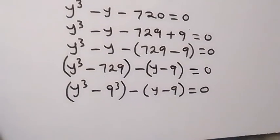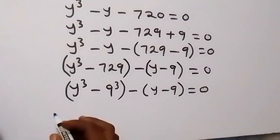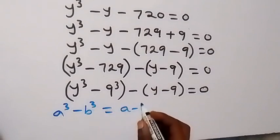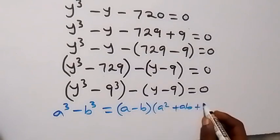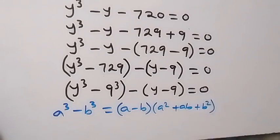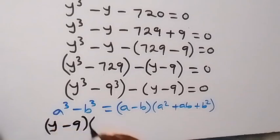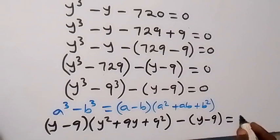Applying the difference of two cubes formula, a³ - b³ = (a-b)(a²+ab+b²), we get (y-9)(y²+9y+81) minus (y-9) equals 0. Since (y-9) is common, factoring it out gives (y-9)(y²+9y+80) equals 0.